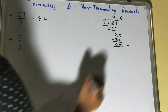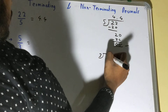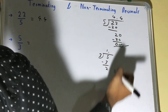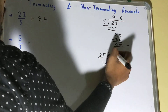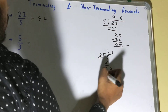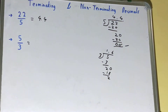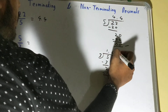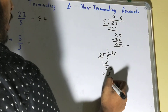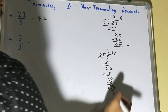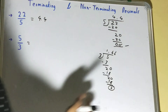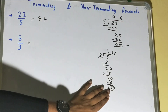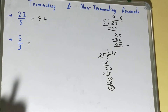Now let's see the next one: 5 divided by 3. So 3 ones are 3, and here we are getting remainder 2. We'll put the decimal — 3 times 6 is 18 — and we are again getting remainder 2. Again putting a zero: 3 times 6 is 18, and again we get remainder 2. No matter how many times we divide, we are left with remainder 2 only. It's a kind of a never-ending decimal.